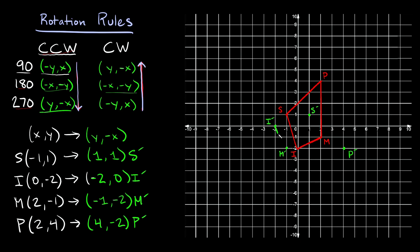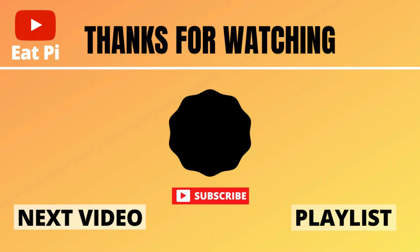Connect the dots and we've just rotated this shape 270 degrees in the counterclockwise direction. If you found the video helpful, definitely leave a thumbs up below, and if you have any other questions or want to see more examples, just let me know in the comment section.